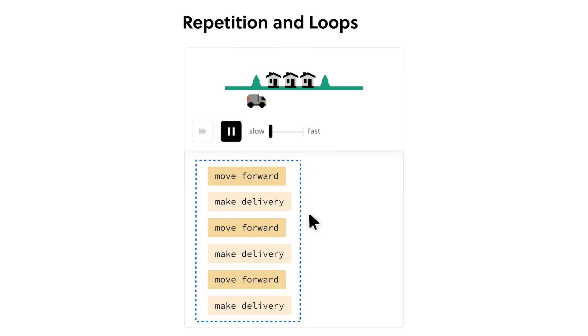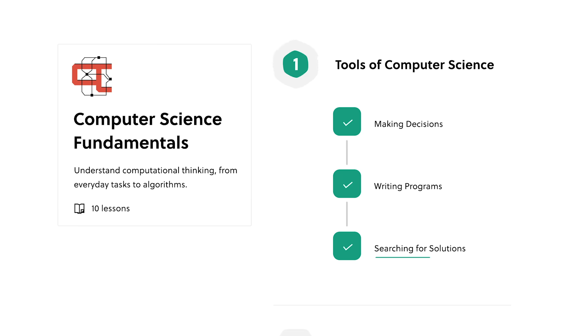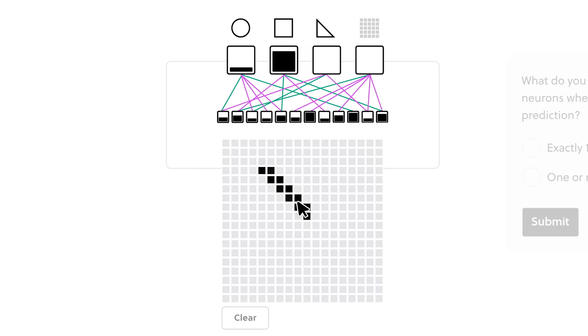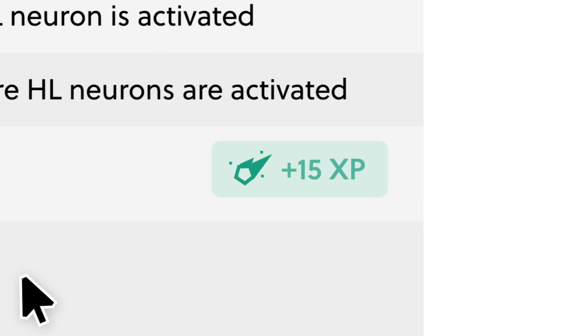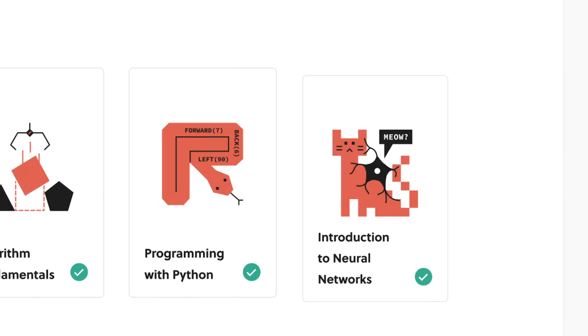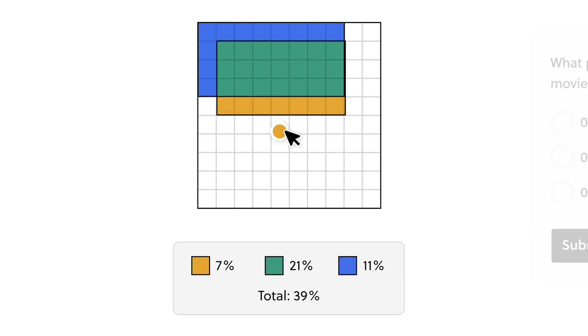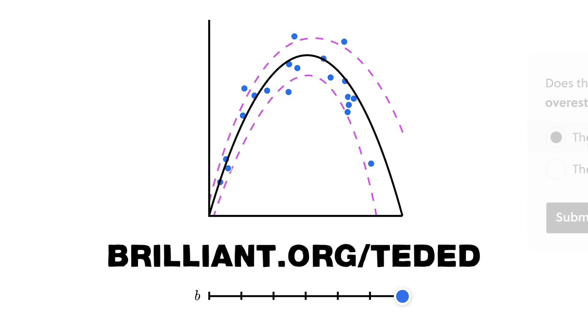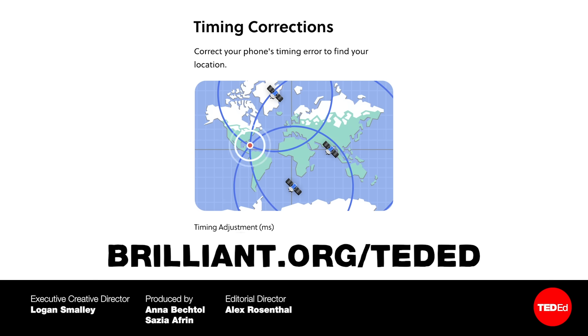Brilliant is a great way to train those logical muscles, whether in math, computer science, or more. With thousands of lessons covering topics from geometry to AI, logic, and neural networks, there's something for everyone. Brilliant's interactive modules can train and refine your intuition for everything from fractions to calculating surface area to calculus, and more. To try it out for free for 30 days, visit brilliant.org slash TedEd. And the first 833 of you to use that link will receive 20% off the annual premium subscription fee.